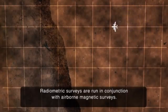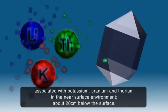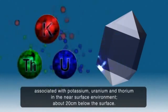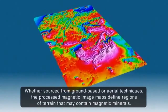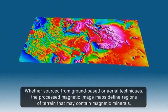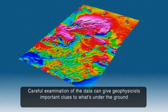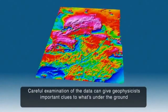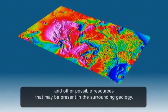Radiometric surveys are run in conjunction with airborne magnetic surveys. Radiometric surveys use a crystal detector which records low-level radiation associated with potassium, uranium, and thorium in the near-surface environment, about 20 centimetres below the surface. Whether sourced from ground-based or aerial techniques, the processed magnetic image maps define regions of terrain that may contain magnetic minerals. Careful examination of the data can give geophysicists important clues to what's under the ground and other possible resources that may be present in the surrounding geology.